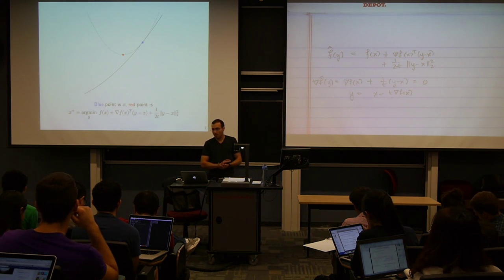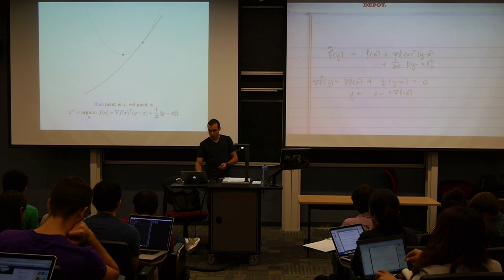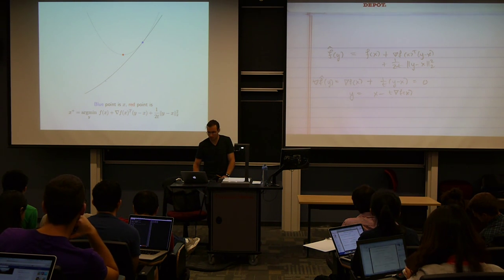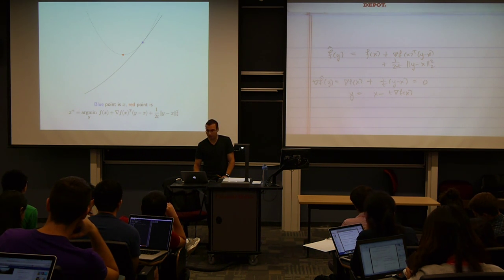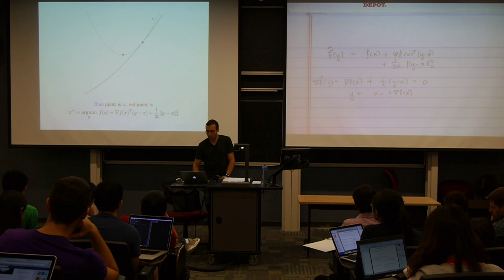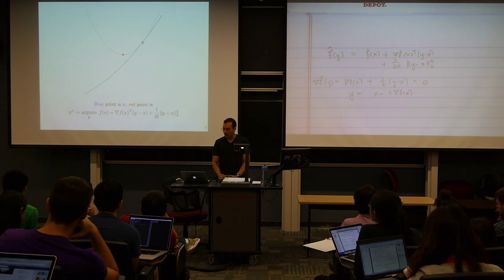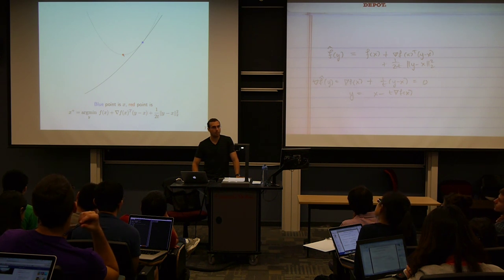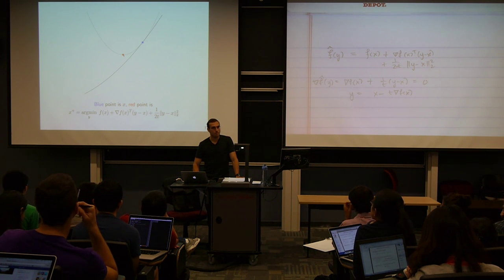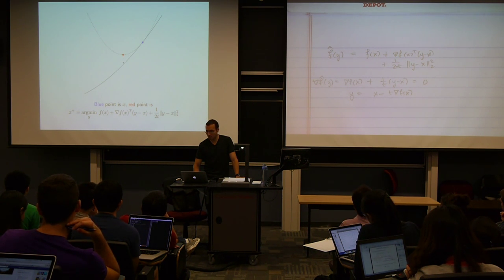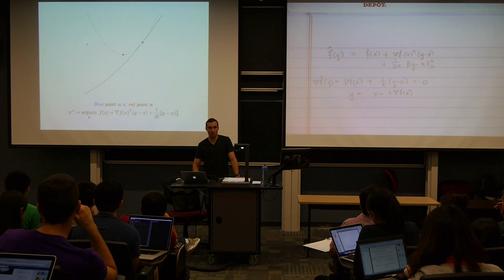Here's a picture of what's happening. The solid curve is the function we're trying to minimize; suppose we're at the blue point x. Gradient descent forms a quadratic expansion — that's the dotted line passing through the blue point — and minimizes this quadratic approximation. The minimizer is the red point, which is where we go next. We then go back to the function at that red point, take another local quadratic approximation, minimize it, and move closer and closer to the minimizer.